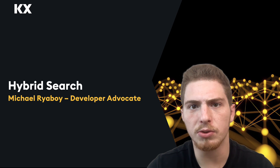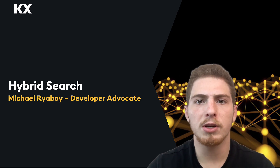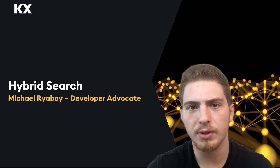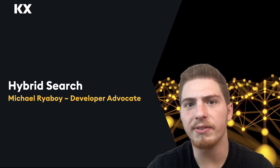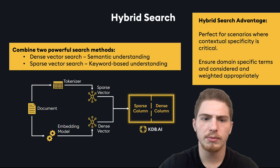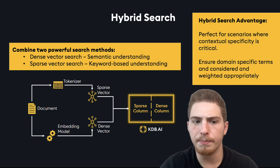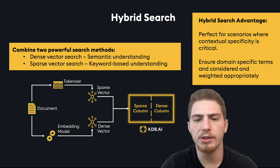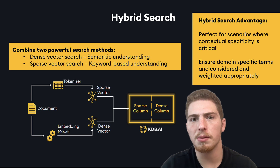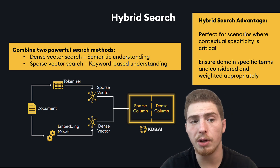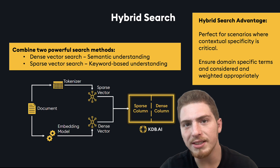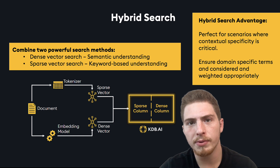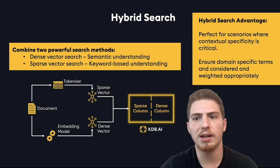Hybrid search seeks to solve that problem by combining keyword search with semantic search and trying to alleviate some of the disadvantages of each. If we wanted to implement a hybrid search pipeline, we would take our document and use a smart tokenizer to create a sparse vector and insert that into a sparse column in our vector database. We would then take the same document and use an embedding model to create a dense vector and insert that into a dense column. We would then be able to search both columns and re-rank the results.